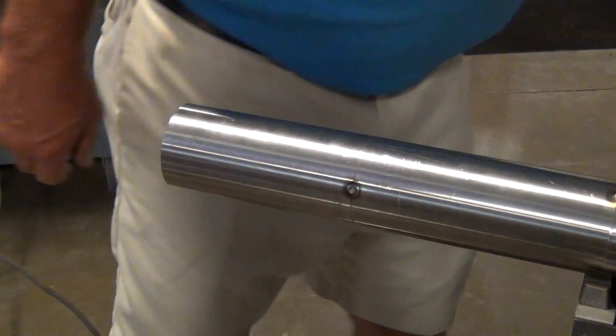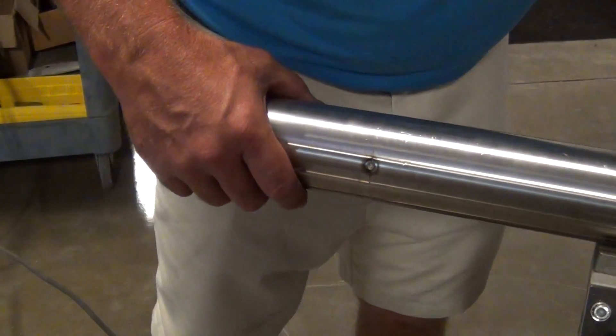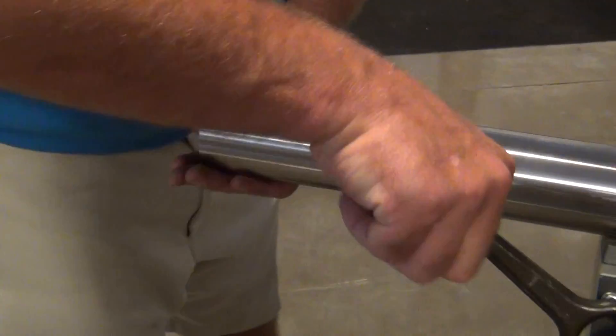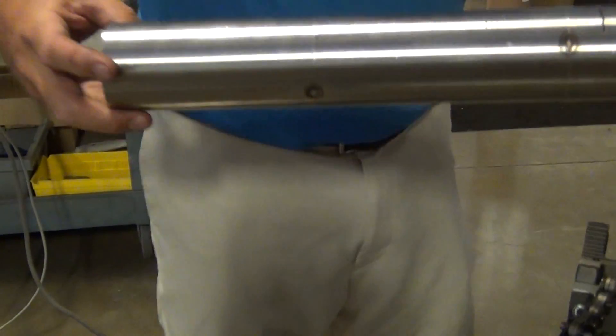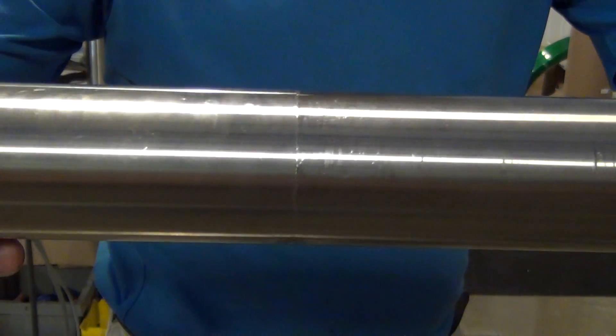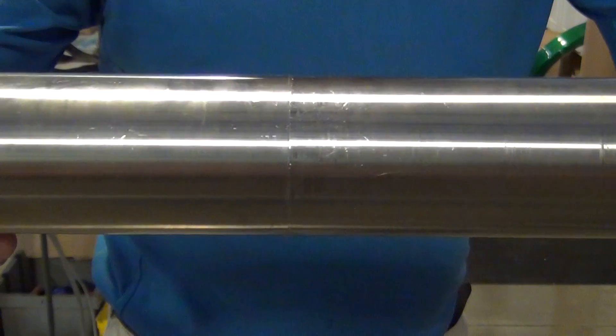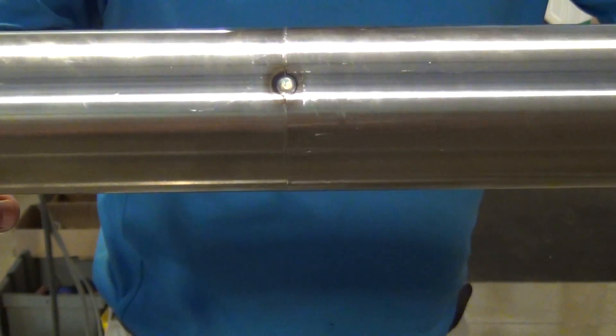But basically what you have now, your end result is two pieces of tubing that are tacked together that are ready for orbital welding, that are pretty doggone square and tight.